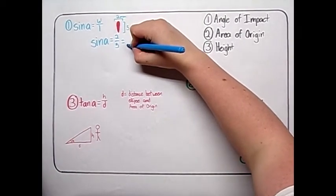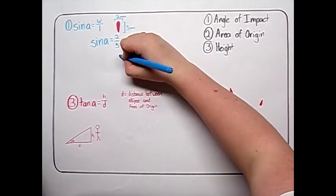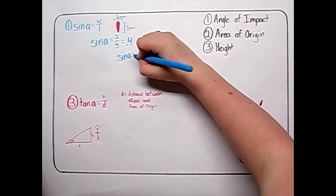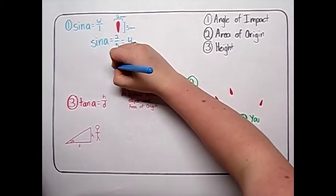Substitute those dimensions into the equation. 2 divided by 5 is 0.4. Sine of A equals 0.4. Now, take the inverse sine of both sides in order to isolate the variable A.